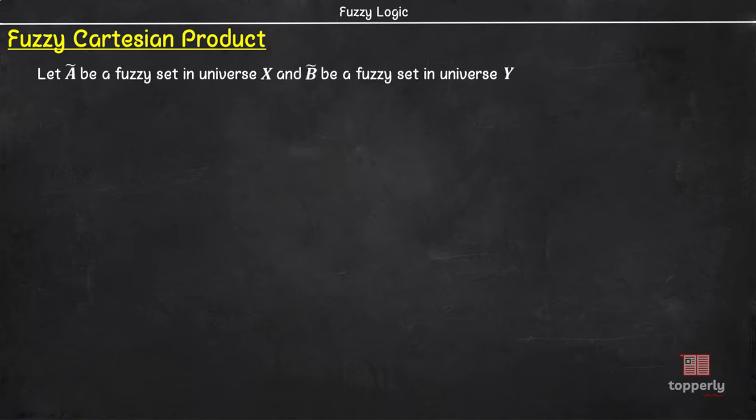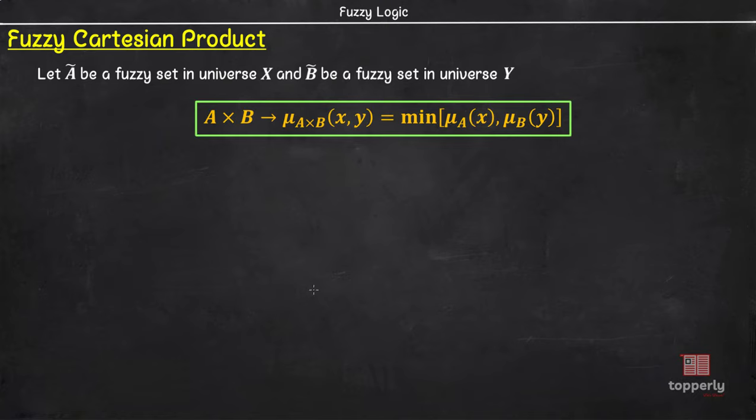Consider a fuzzy set A in universe x and fuzzy set B in universe y. Then, the membership function of each ordered pair in the fuzzy cartesian product A x B is given by minimum of µA of x and µB of y where µA and µB are membership values of elements x and y in the fuzzy sets A and B respectively.